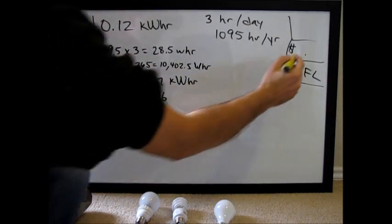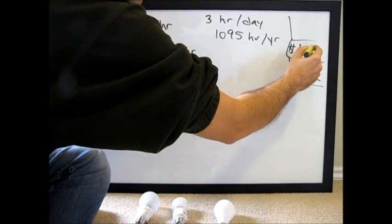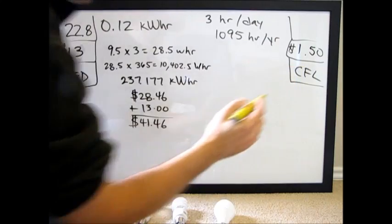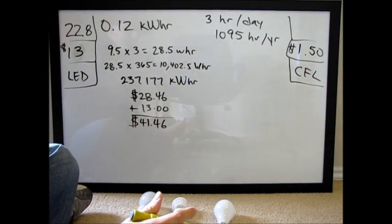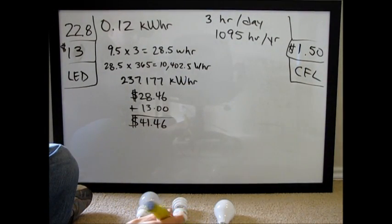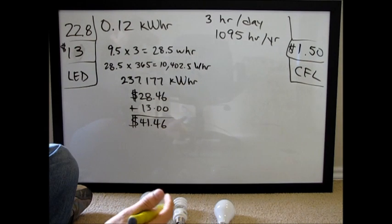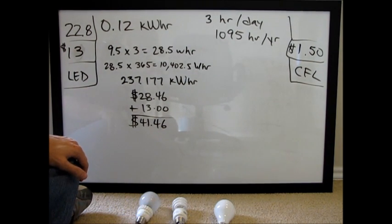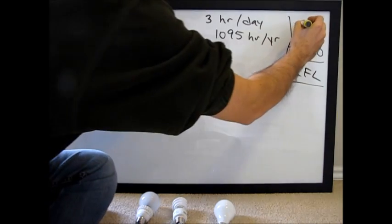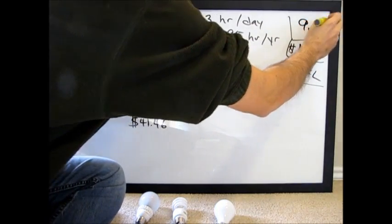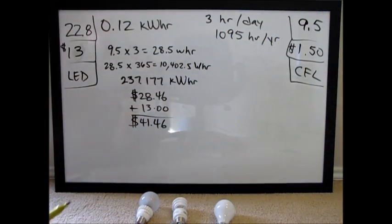These bulbs you can usually get in a four pack for pretty cheap. So let's say $1.50, which is a pretty reasonable average price. This particular bulb is a 14 watt bulb, and it lasts for 9.5 years at the three hour per day rating. Now let's do the math on that.